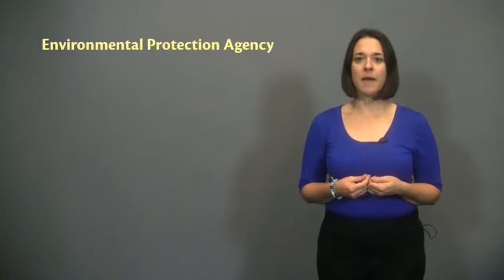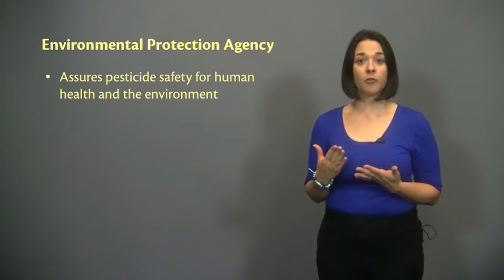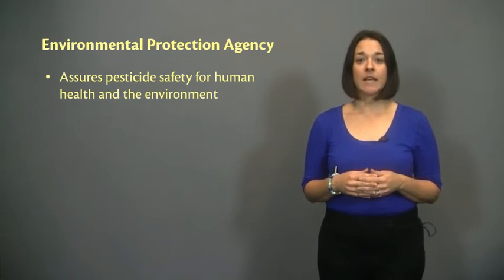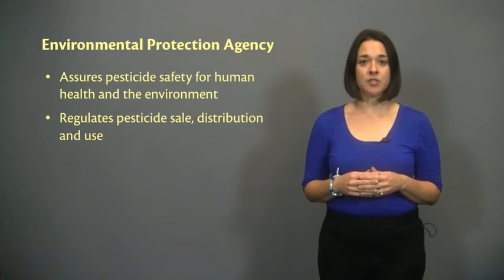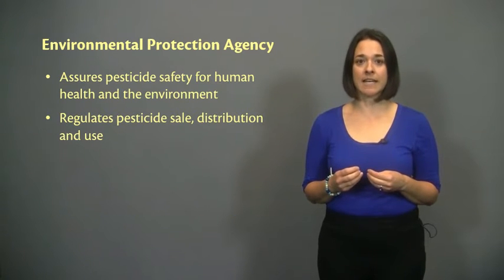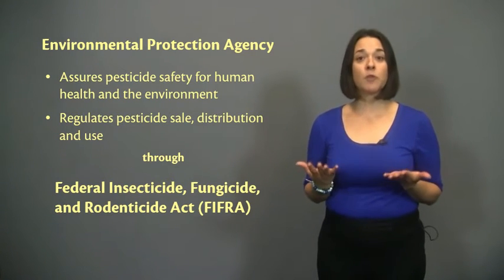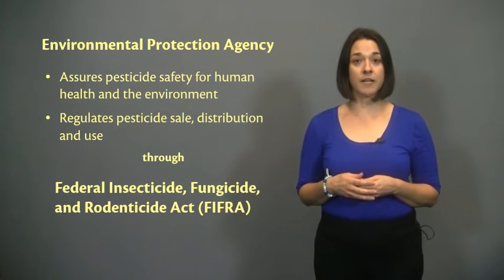All pesticides pose some level of risk. As mentioned in the first section, EPA must ensure that pesticides do not pose any unreasonable risks to human health or the environment. The basis for the regulation, sale, distribution, and use of pesticides in the United States is the Federal Insecticide, Fungicide, and Rodenticide Act, which authorizes EPA to review and register pesticides for specified uses.